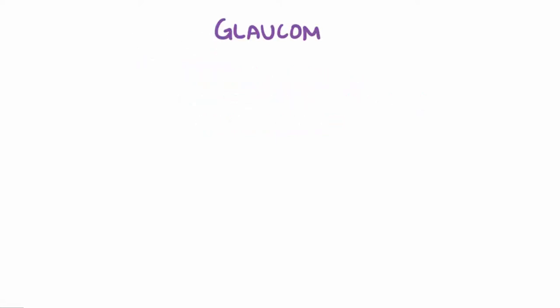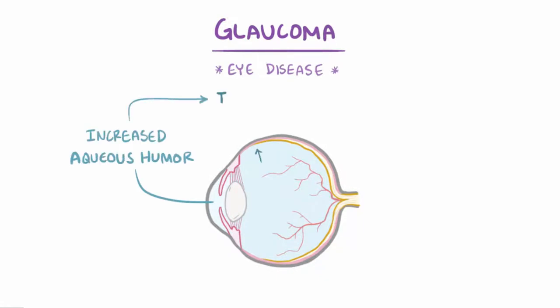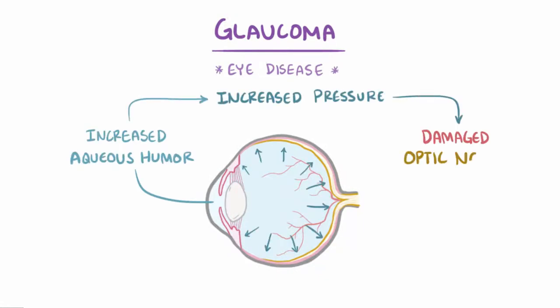As a quick recap, glaucoma is an eye disease where a buildup of aqueous humor causes increased pressure in the eye, and this damages the optic nerve and can result in blindness.